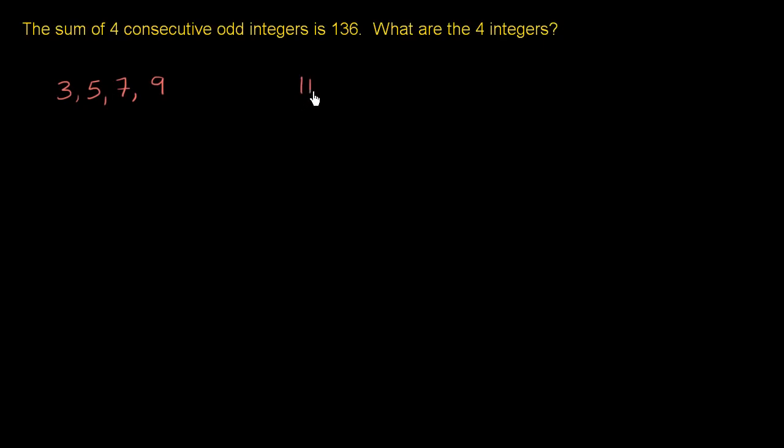Another example, we could start at 11, then the next odd integer is 13, the next one is 15, the next one is 17.